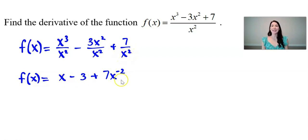Now that I've rewritten it I'm going to use the power rule to find the derivative. So I would use the notation f prime of x equals the derivative of x is simply 1. The derivative of the constant negative 3 is 0.